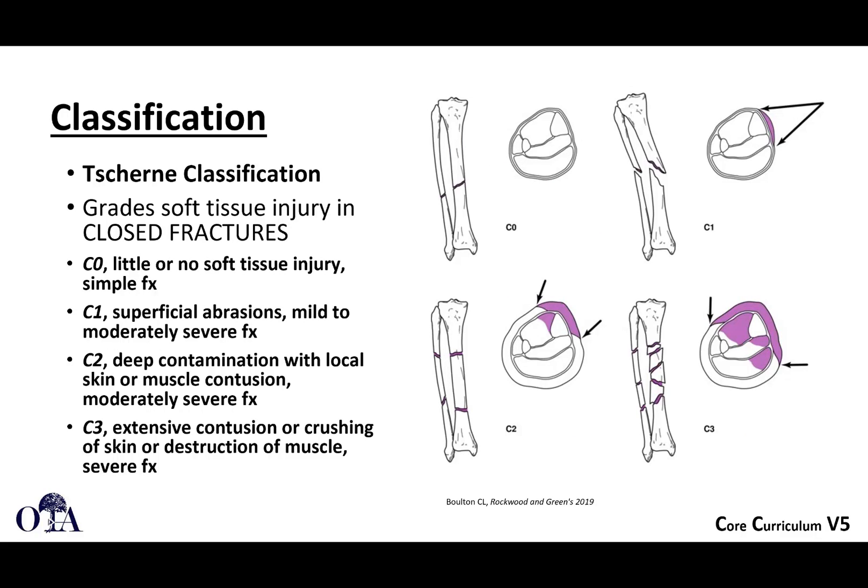The Tscherne classification is used for closed fractures. It can help identify whether you have a mild soft tissue injury versus something where you are very worried about compartment syndrome, for example. This classification starts with zero and goes through zero, one, two, and three.